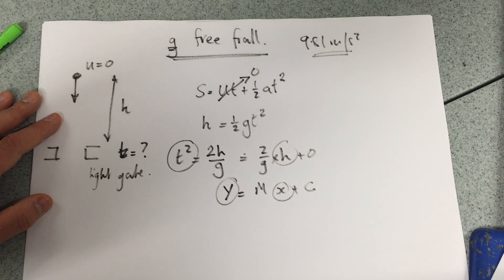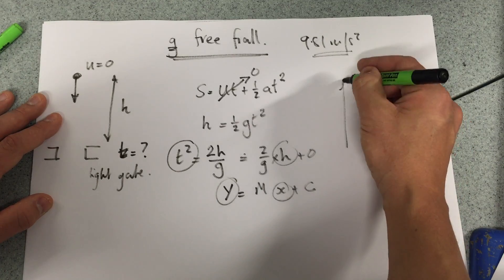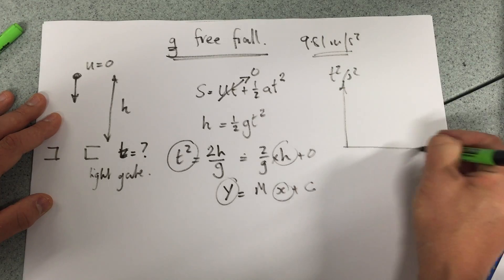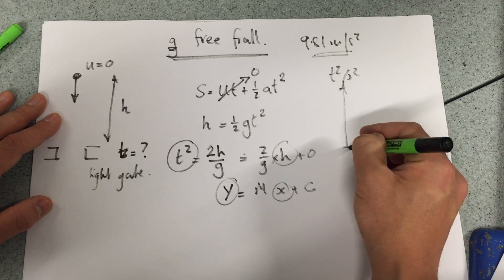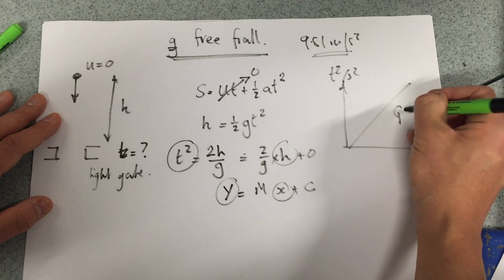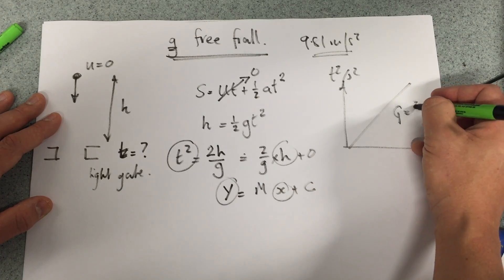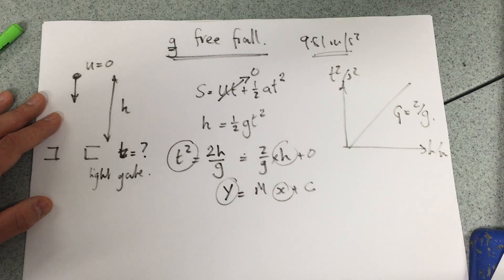my gradient should be 2 over g. So we'll be plotting t squared in seconds squared against h in metres, straight line where the gradient should equal 2 over g.